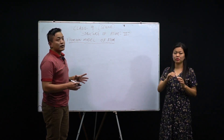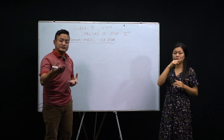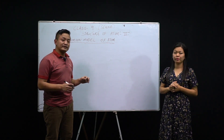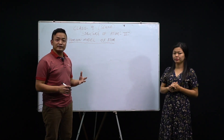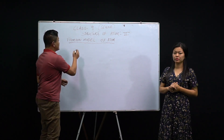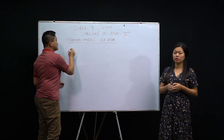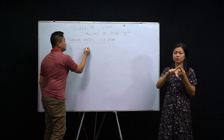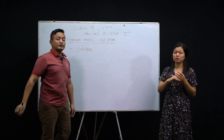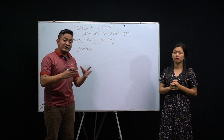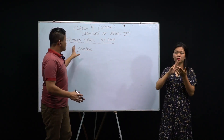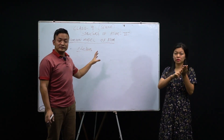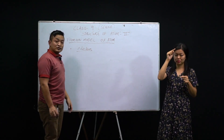Thomson's model is like a watermelon — the red edible part represents the positive part, and the black seeds embedded in it represent the electrons, the negative charges. Now, one of the failures of this model is that it did not say anything about the nucleus. In the present-day atom, we have the nucleus at the center, but Thomson did not mention anything about it.